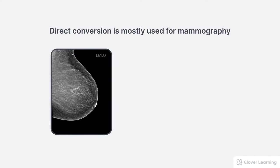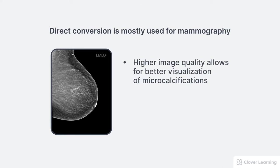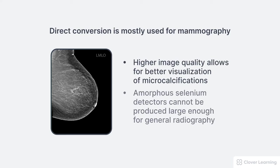Direct conversion DR systems are mostly used in mammography. This is for two reasons. First, the higher image quality allows for better visualization of microcalcifications. Second, the amorphous selenium detectors cannot be produced large enough for use in general radiography.